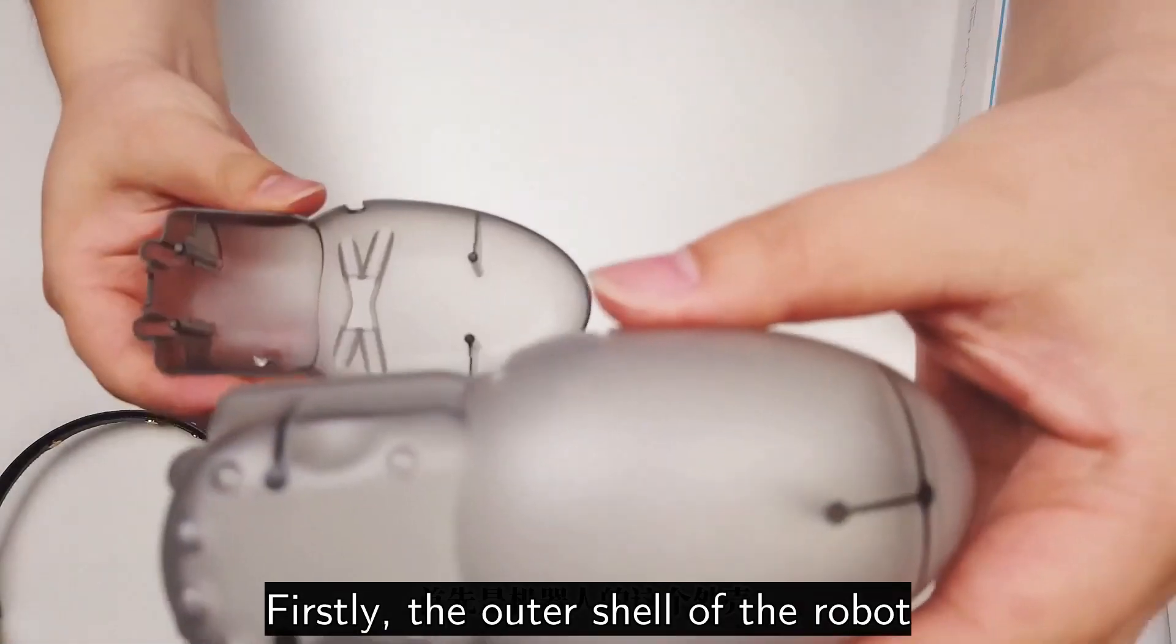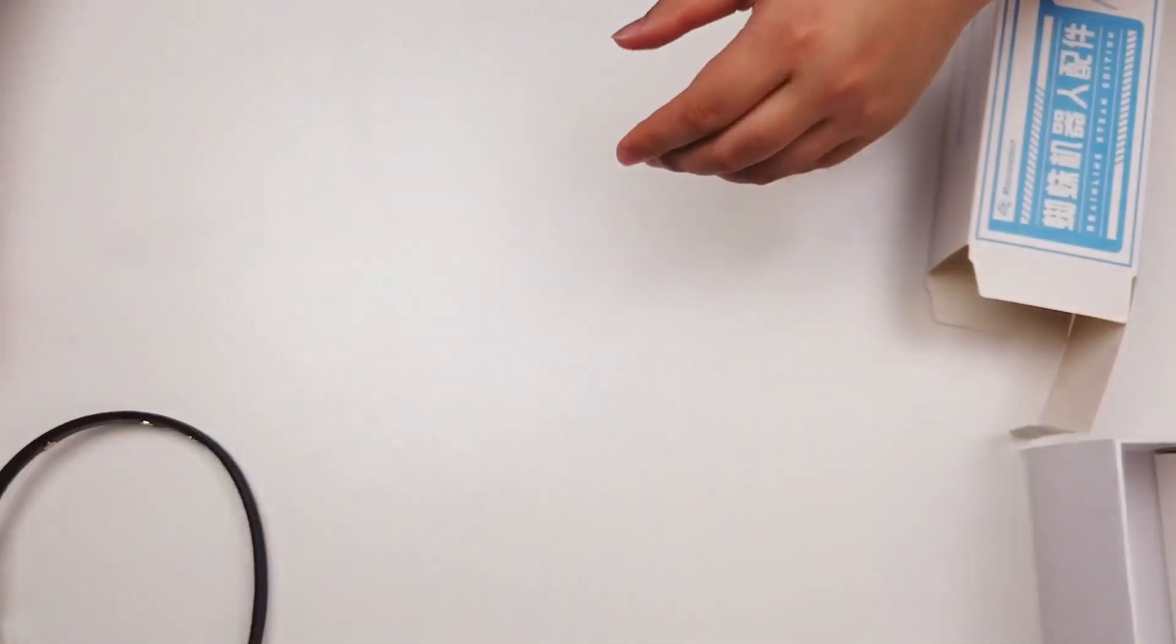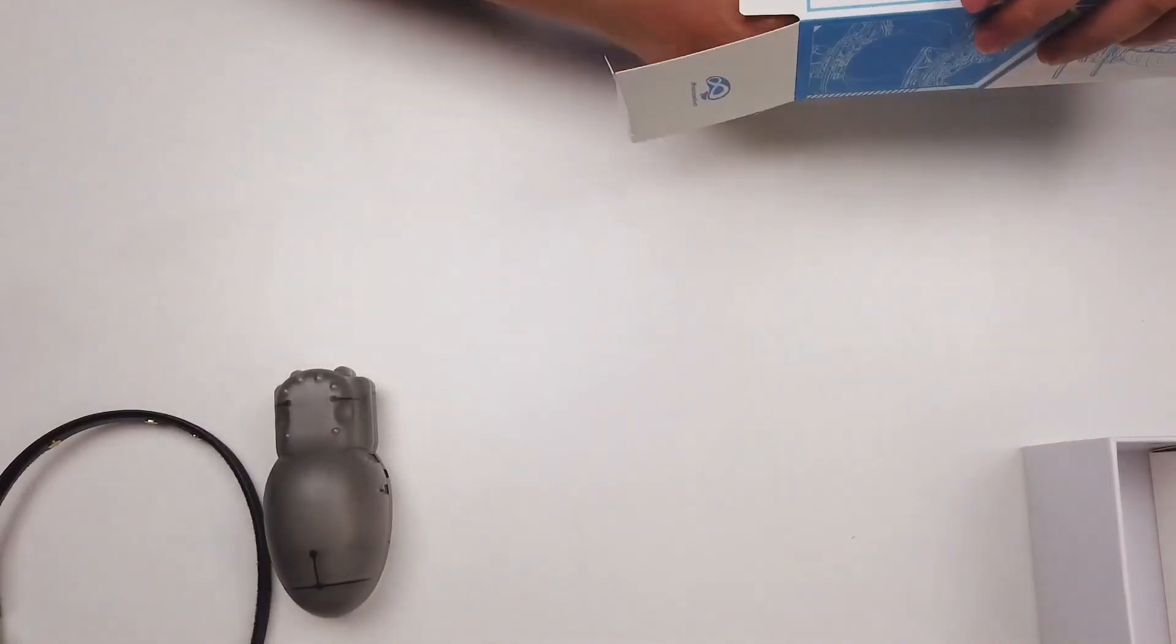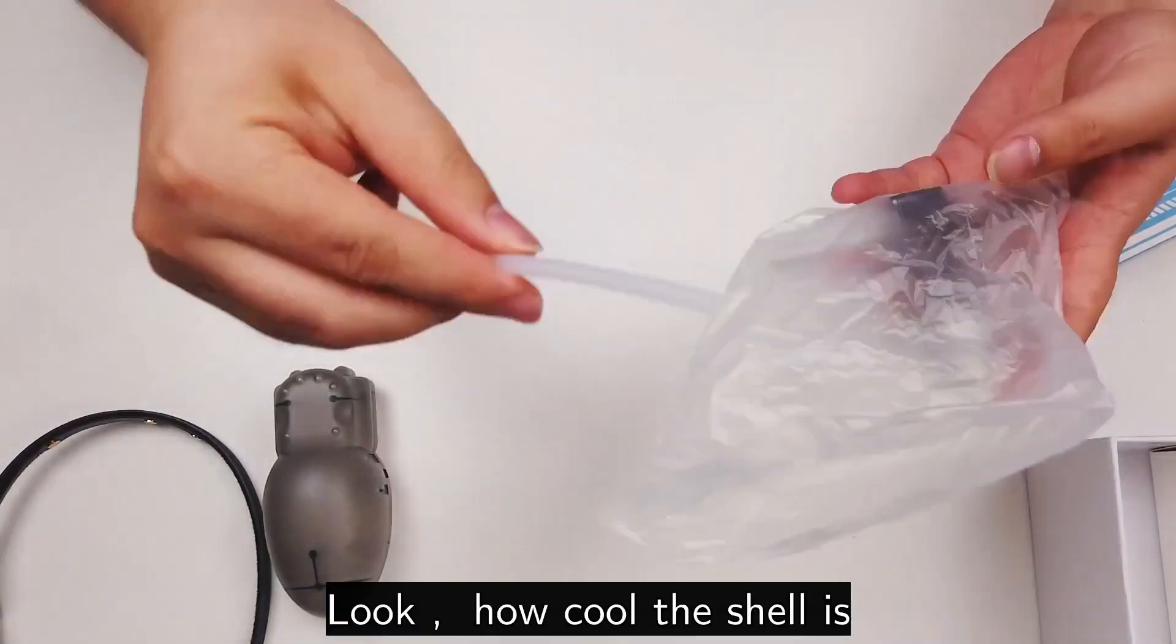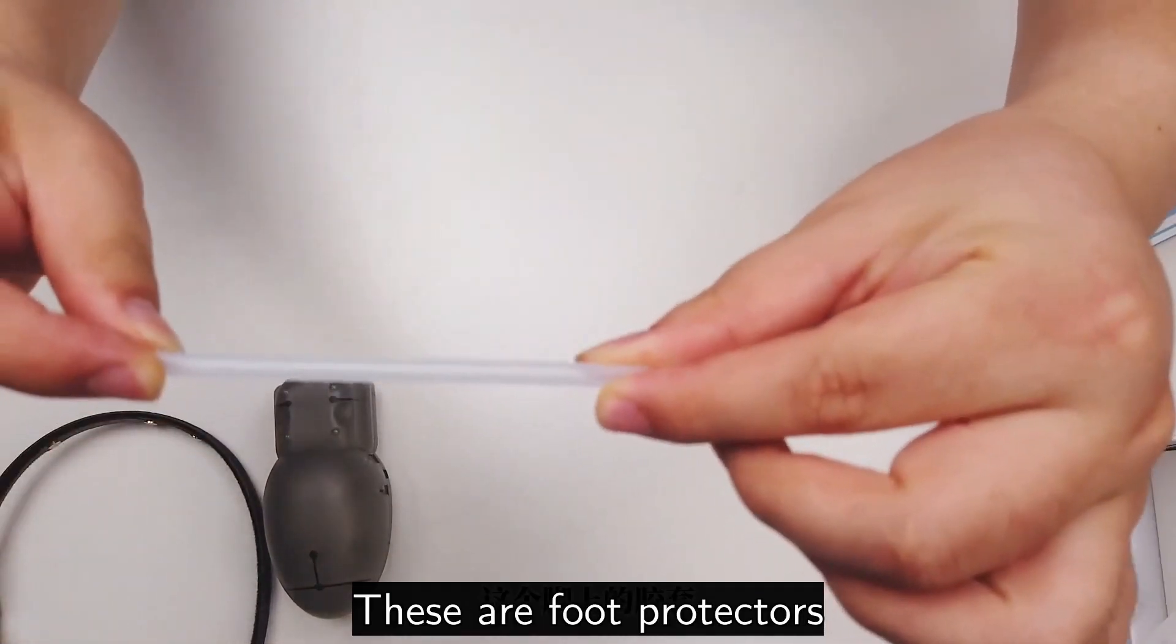Firstly, the outer shell of the robot. This is a new shell. Look how cool the shell is. These are foot protectors.